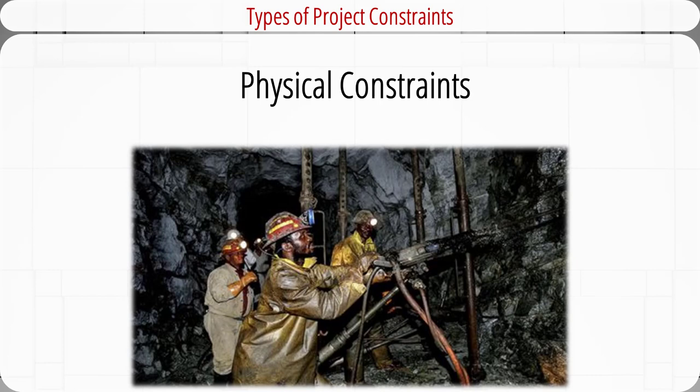Physical constraints can also affect the project schedule because activities may not occur in parallel or are affected by contractual or environmental conditions. Working in a mine is an example of physical constraints, since space allows only a few people to work at the same time, so all tasks have to be performed sequentially.